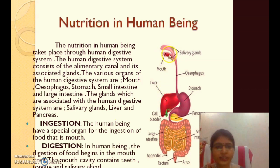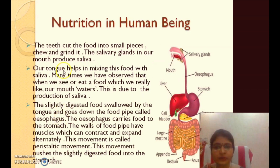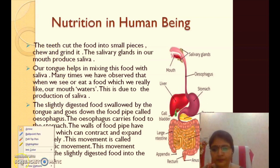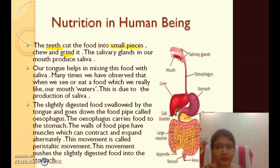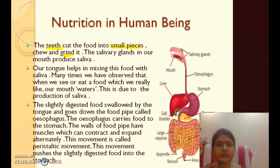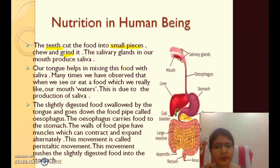The mouth has teeth, tongue, and salivary glands. Teeth are used to cut food into small pieces. The tongue is used to mix food with saliva. Saliva is a sticky material mixed with our food. When we look at food, our mouth waters — this is because our salivary glands produce saliva.